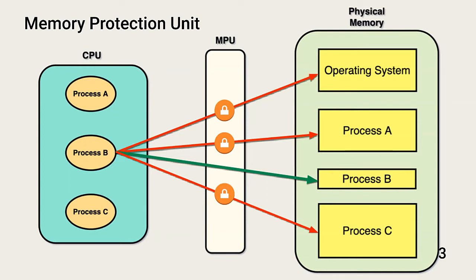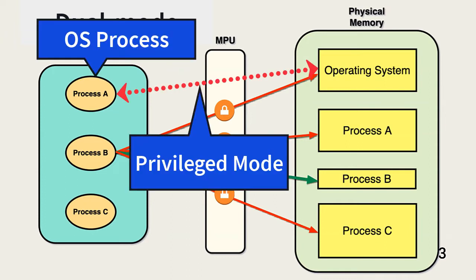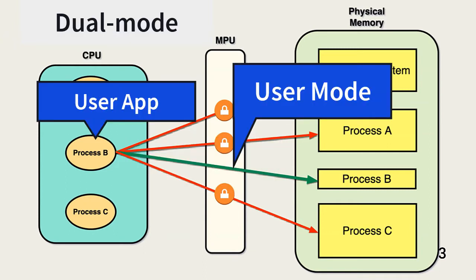Another memory protection capability is dual-mode operation. In dual-mode, a processor can operate in one of two modes: privileged or unprivileged. The operating system runs in privileged mode, also known as supervisor or kernel mode. User applications run in unprivileged or user mode. Privileged mode enables the operating system to set up memory protection and execute privileged operations.